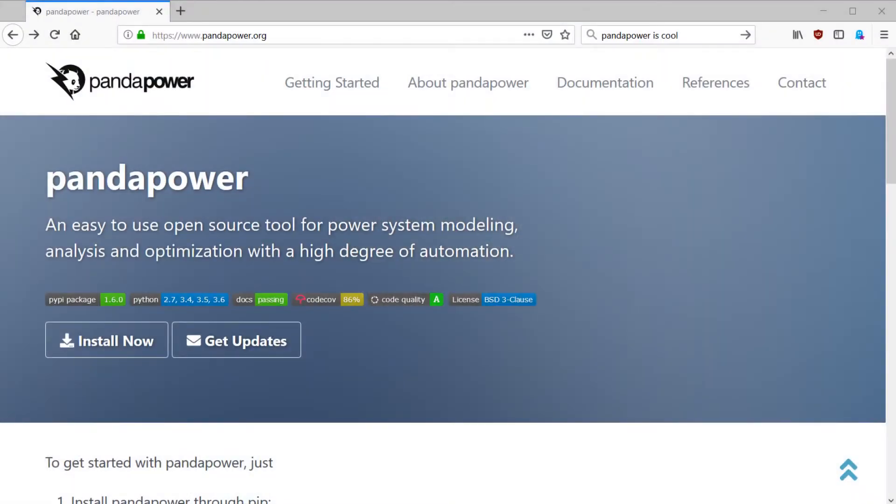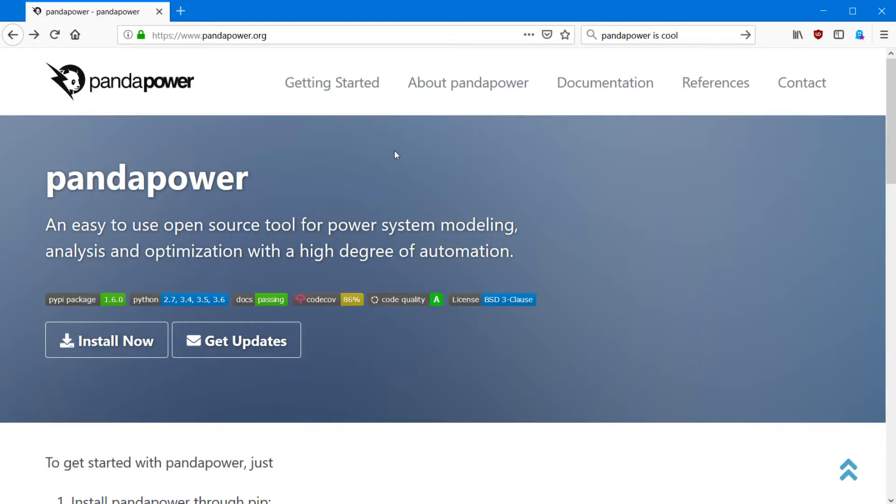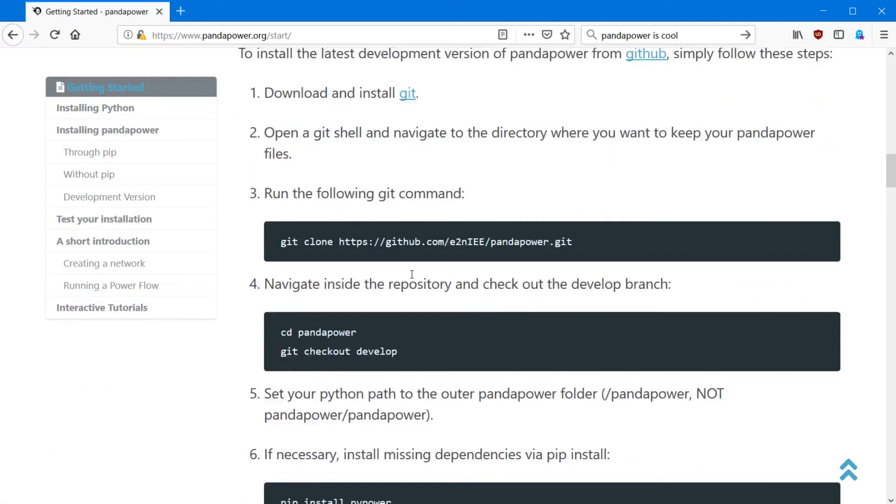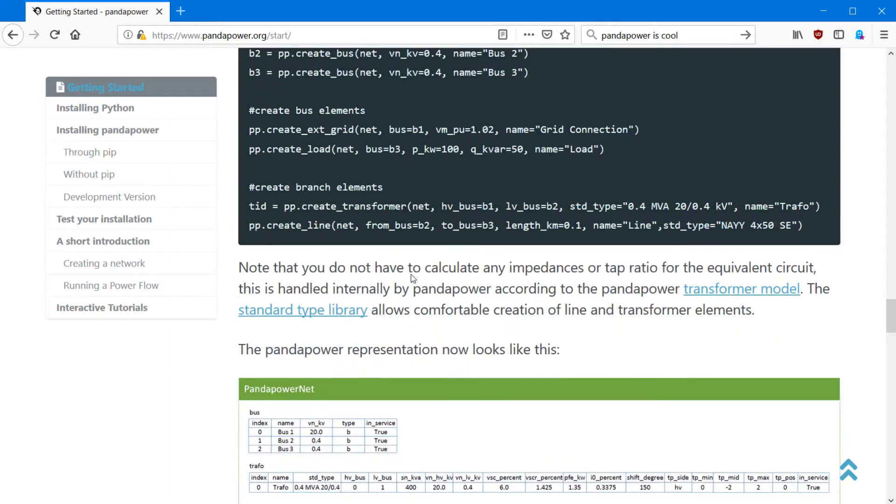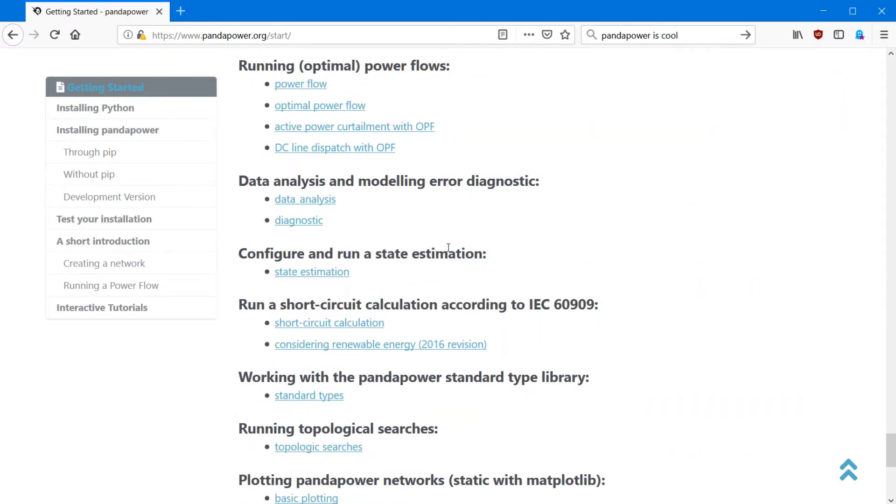If you want to find more information, you can look at our website at pandapower.org. If you click on getting started, you'll find information on how to install it, a first easy example, and if you scroll down, there are many Jupyter notebooks that explain how to use PandaPower.